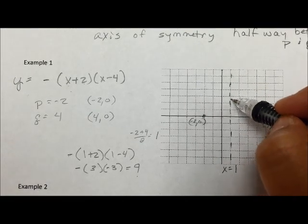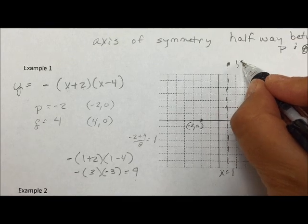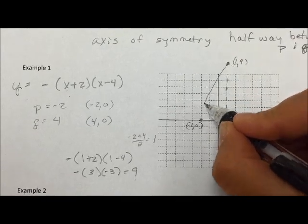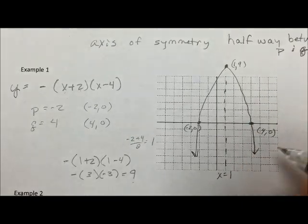So 1, 9 will be up here. And then my parabola is just graphed by going down through those two intercepts.